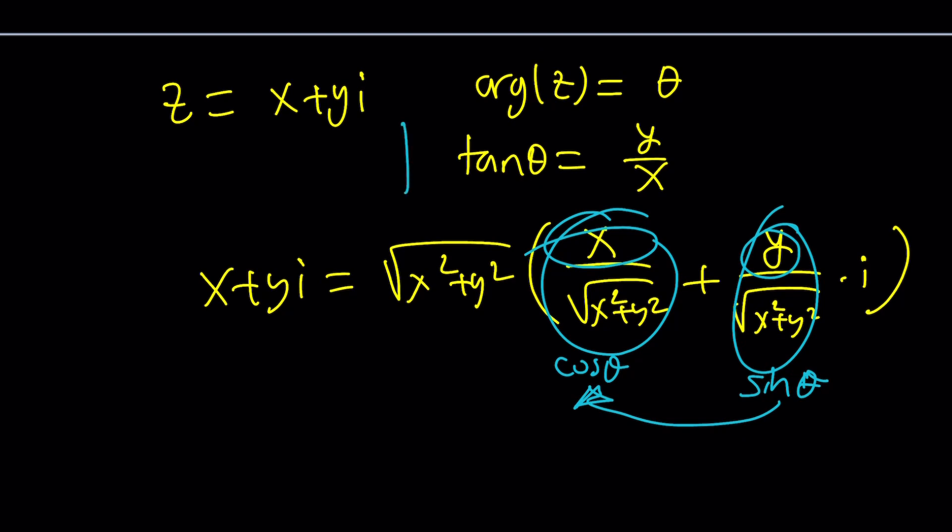Well, tan θ is y over x, but what is θ? If you ask me, there's multiple answers depending on the quadrant. But in general, θ can be expressed as arctan y over x, or maybe π plus this or π minus that.